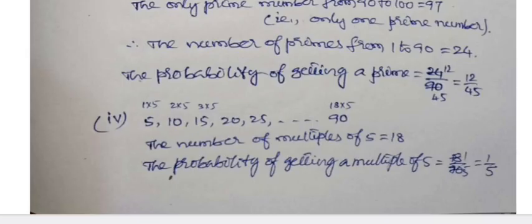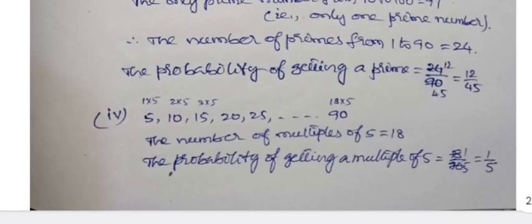Part 5: 5, 10, 15, 20, 25 up to 90 are the multiples of 5. You can very clearly see here the first one is first multiple of 5, second one is second multiple of 5. 90 is 18th multiple - first one is 1 into 5, 2 into 5, 3 into 5, in this way 90 is 18 into 5. So these numbers are 18 - the first 18 multiples of 5 are taken. So the number of multiples of 5 is equal to 18. Probability of getting a multiple of 5 is 18 by 90, that is 1 by 5.